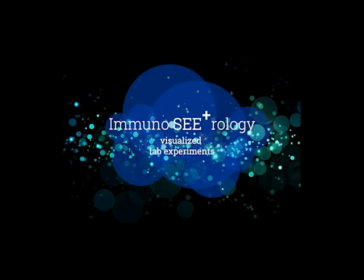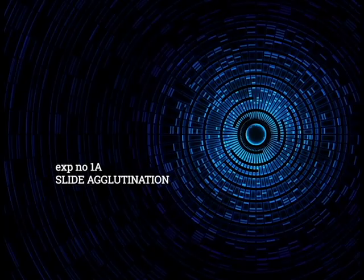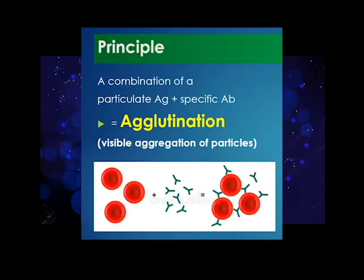Immunoserology Visualized Lab Experiments, Experiment No. 1A: Slide Agglutination. The principle involved in agglutination is that it is a combination of a particulate antigen plus its corresponding specific antibody, which results in the formation of the visible aggregation of particles.